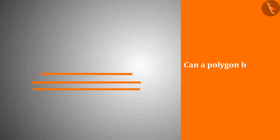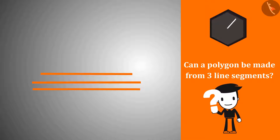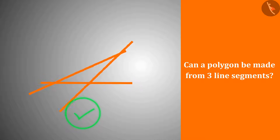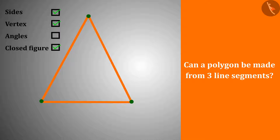A polygon can be made from three line segments. Joining three line segments gives us a simple closed curve with three sides, three vertices and three angles, which fulfills all the conditions for a polygon. We can make a polygon by joining three or more than three line segments.